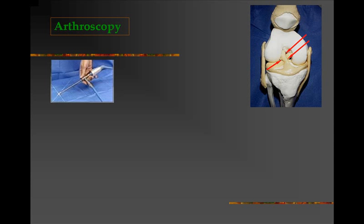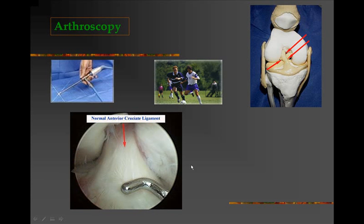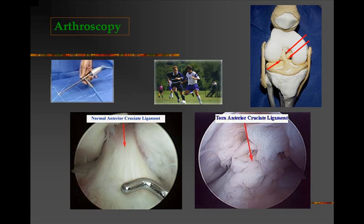Arthroscopic examination of the knee joint can supplement radiological imaging. In this procedure, a small pencil-like instrument is introduced into the joint through small stab incisions, with a camera and light source fitted for easy visualization. Structures such as cartilage and ligaments injured in sports can be visualized easily. Here is an example of the normal anterior cruciate ligament seen arthroscopically, with the condyles of the femur and a probe used for tactile examination. On the right, we see an example of a torn anterior cruciate ligament where synovial hypertrophy has taken place and the body's attempt to heal it is visible.